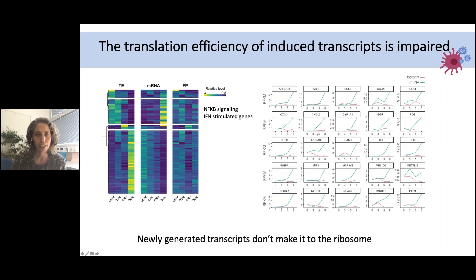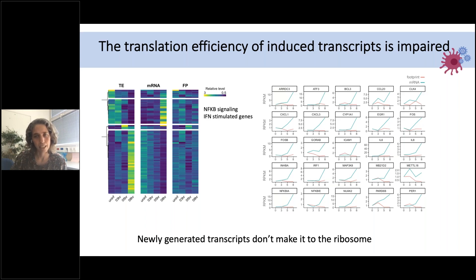For specific examples like IL-6 and IL-8: in blue the mRNA is going up — cells are sensing infection and producing these cytokines — but the footprints are flat, not changing. This suggests newly generated transcripts don't make it to the ribosome. They are being made but never engage with ribosomes. One possible explanation: SARS-CoV-2 inhibits cellular mRNA export.